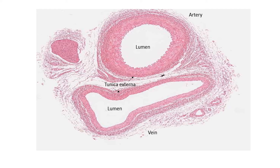Then you can distinctly see the next layer, which is called the tunica media. Again, find out if you haven't done so already whether there are collagen fibers, elastic fibers, or smooth muscle.